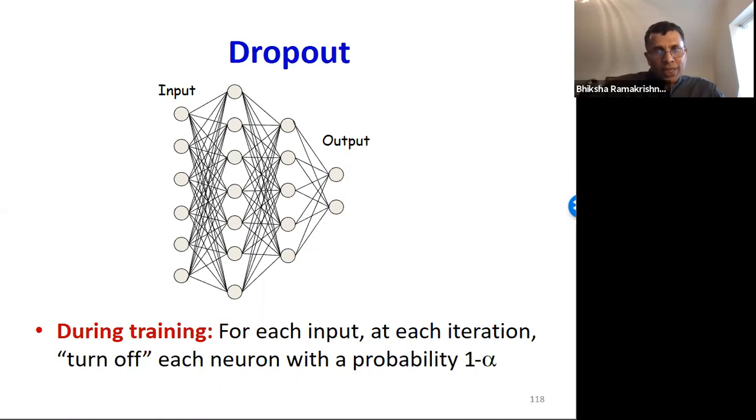Dropout is a training method where in each iteration, for each input, we randomly turn off or drop out some of the neurons in the net with some probability one minus alpha. So each neuron is either retained with a probability alpha or it is switched off with the probability one minus alpha.